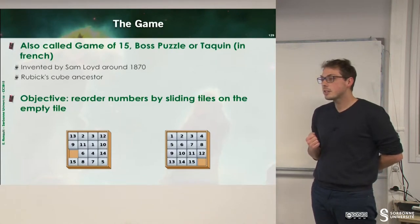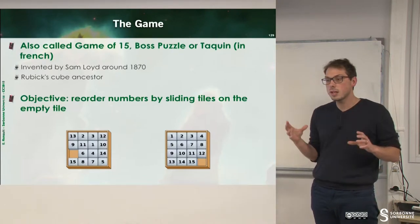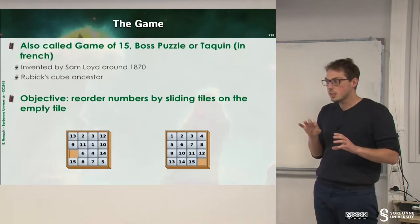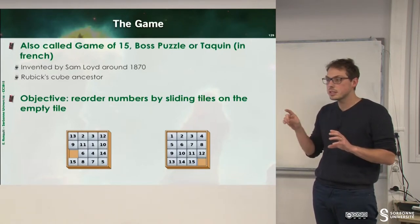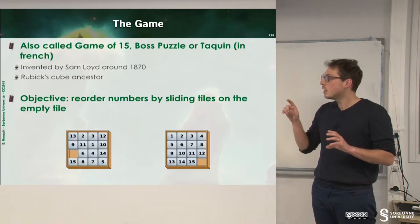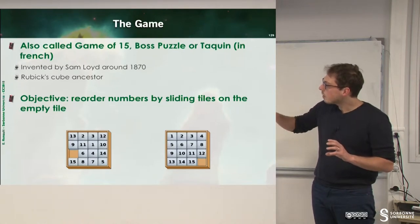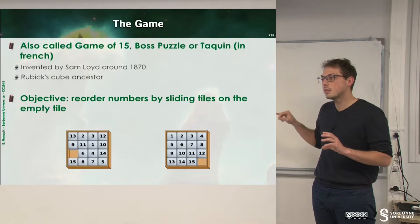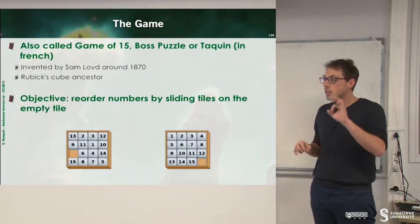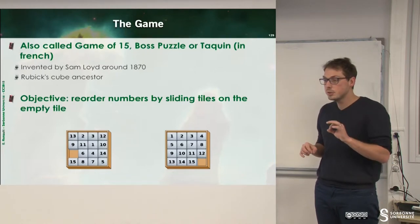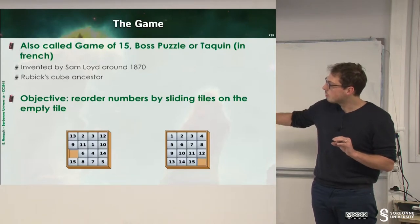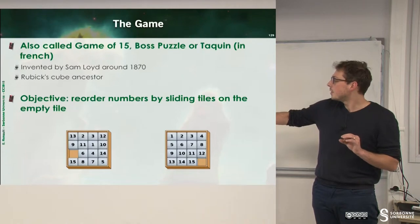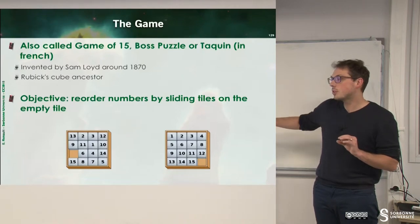The Gem Puzzle is a small game with tiles, and the goal is to order tiles to have 1, 2, 3, 4, 5, 6, 7, 8, and so on. There is an empty room, and the goal is to move tiles — for example, moving 12 from the top to the bottom, or 15 from the left to the right.